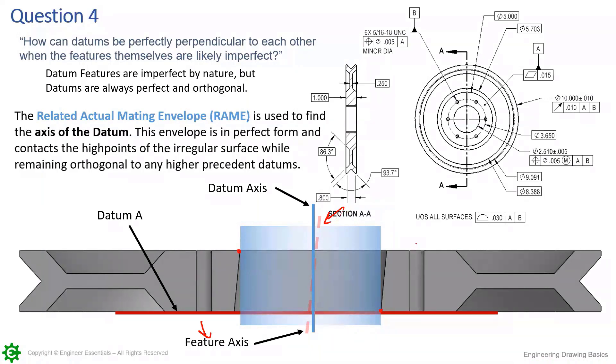We're creating a datum axis using this related actual mating envelope. Now we can locate all these other features to this datum axis. We're not locating these features to this feature's axis, it's located to the datum's axis.